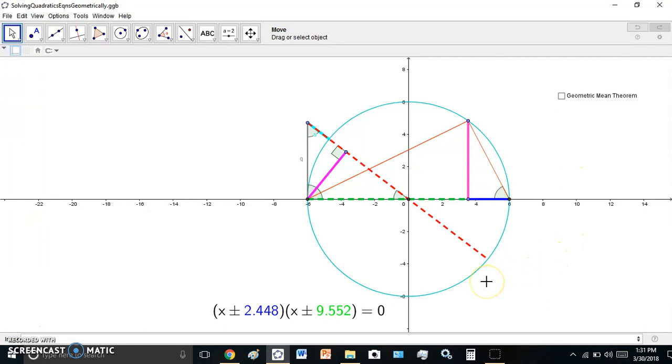Well, the method is based on the geometric mean theorem, which states that the square of this altitude is equal to the product of the green line length multiplied by the blue line length. And these here would be the roots.